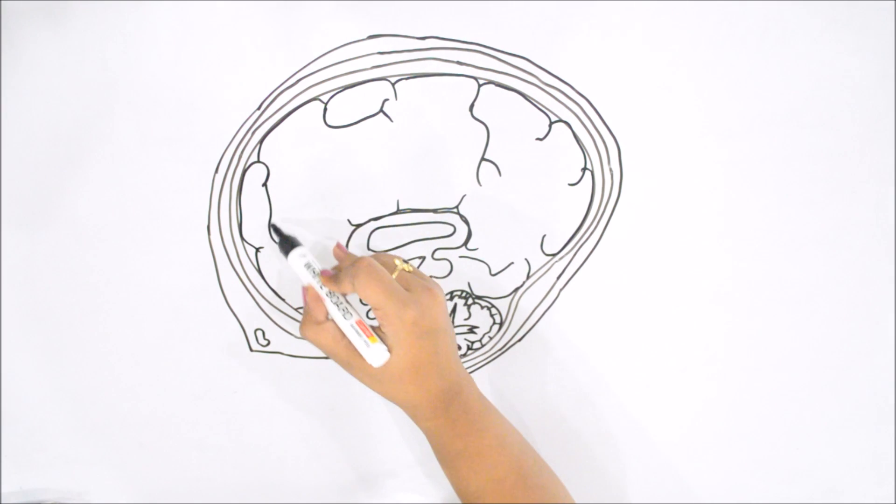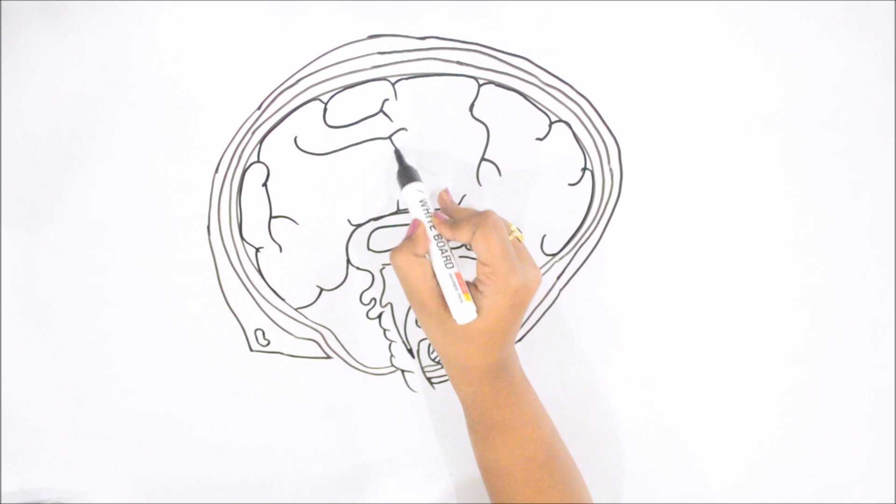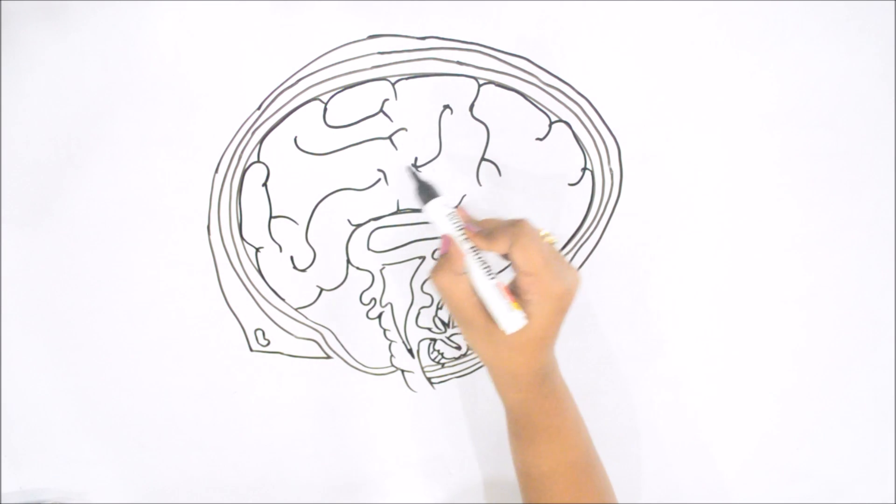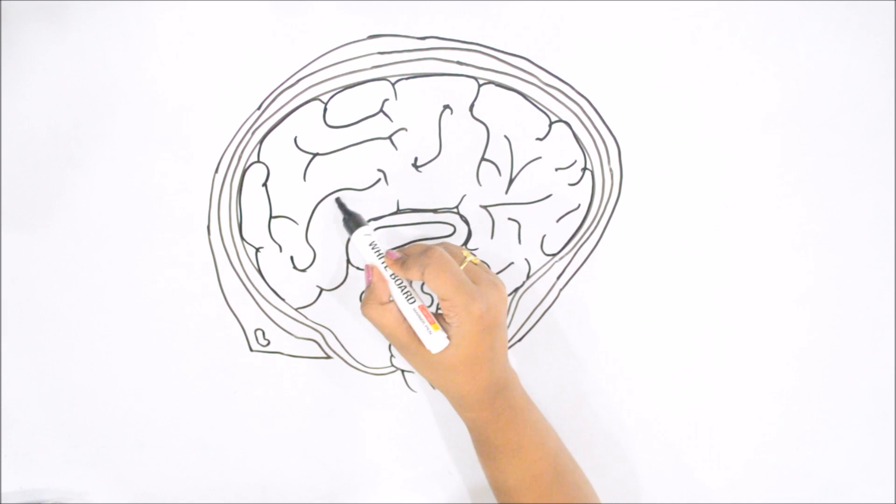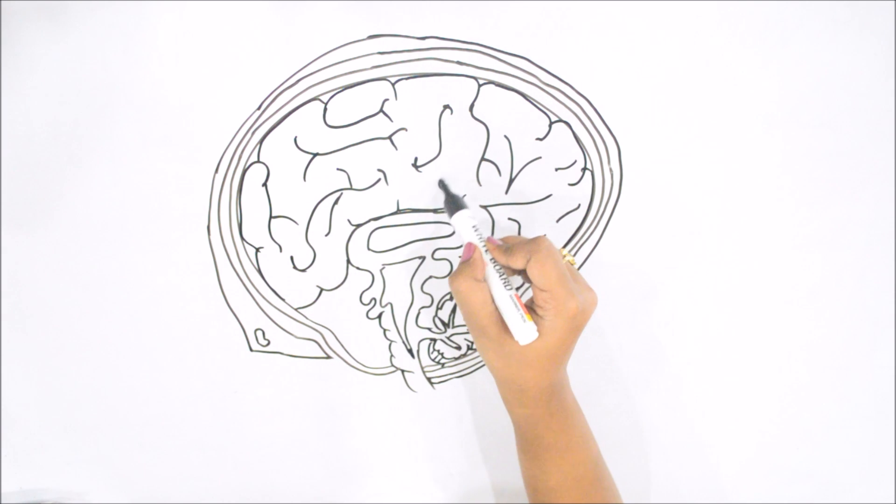We will make some V or C like structures to give it a 3D look. V and C to give it a 3D look, just we have done in intestine also. This is your cerebrum.